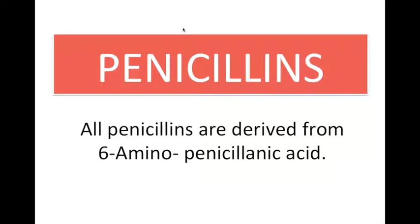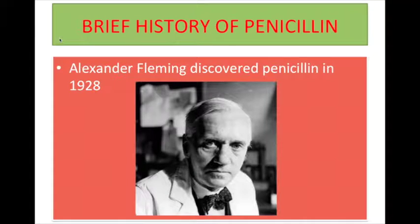To start off, we have the penicillins. All penicillins are derived from 6-amino penicillanic acid. For the brief history of penicillin, the discovery of penicillin, one of the world's first antibiotics, marks a true turning point in human history when doctors finally had the tool that could completely cure their patients of deadly infectious diseases. Penicillin was discovered in London in September of 1928.